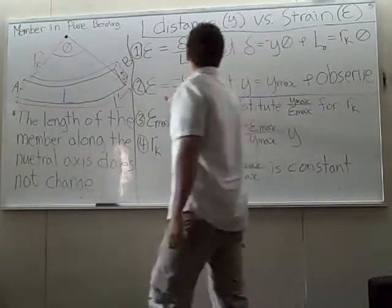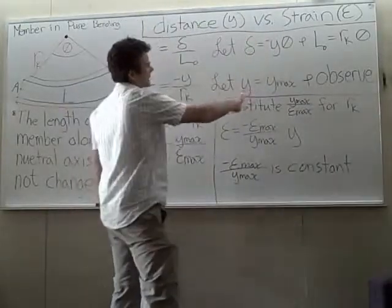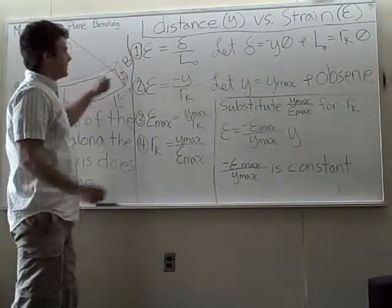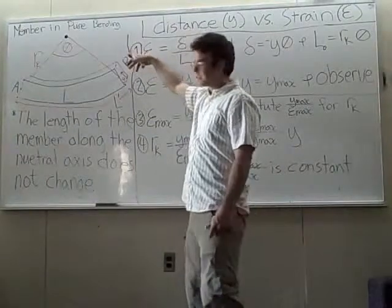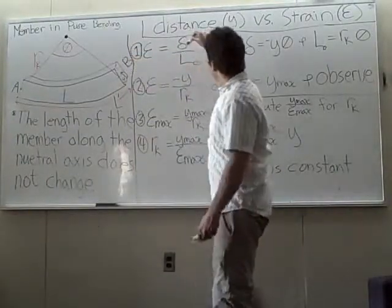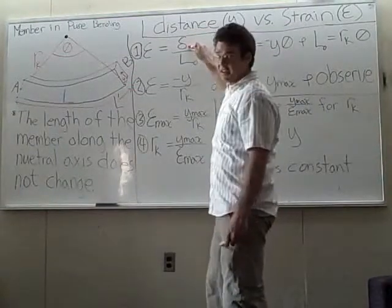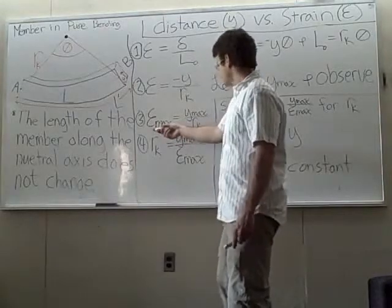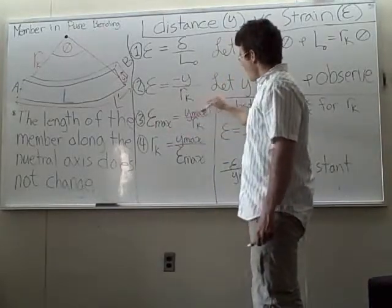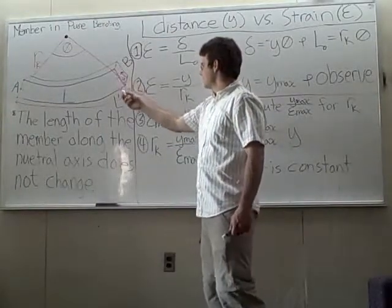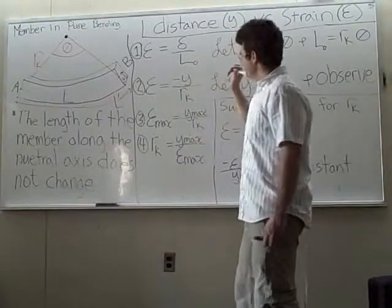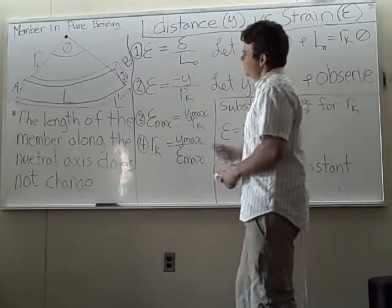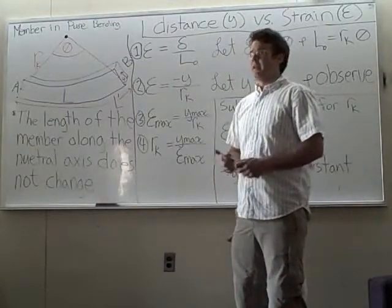From here, we let y equal y_max and observe that when y equals y_max, the distance from the neutral axis is greatest. When it's at its greatest, the deformation is at its greatest, and therefore the strain is at its greatest amount. So the maximum strain equals y_max — the furthest distance possible from the neutral axis. Sometimes it's down, sometimes it's up, so you really have to watch your signs. If you draw your diagrams and think about what you're doing, you'll be able to get your signs right.